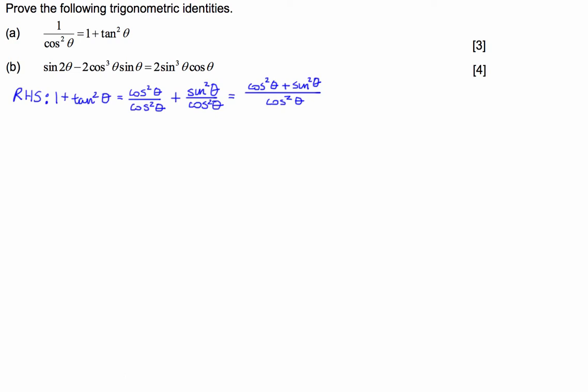The Pythagorean identity states that cos squared theta plus sin squared theta is always equal to 1. So I can substitute cos squared theta plus sin squared theta for 1, and hopefully you'll see where I'm going with this.